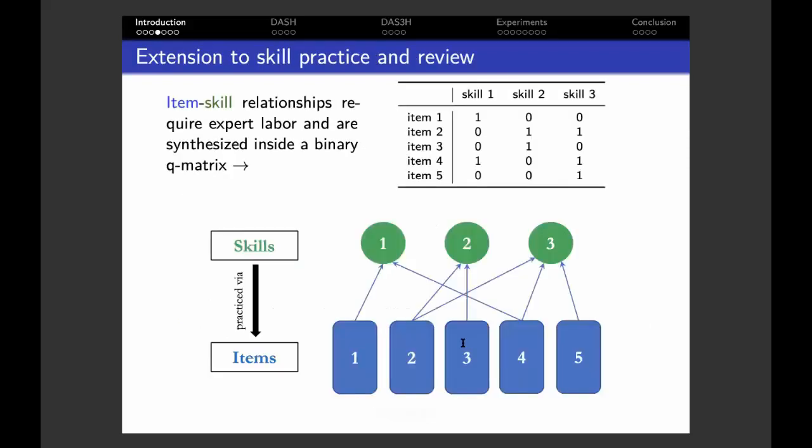Our goal is to extend adaptive spacing algorithms to skill practice and review. In flashcard learning research, the student must learn and review the items, which you can see here in blue. But in our research setting, the student solves items to practice and review a set of underlying skills, shown here in green circles. These item-skill relationships are synthesized in the so-called binary Q matrix. In this Q matrix, a cell contains a 1 if the item from the row involves the skill from the column, and a 0 if not.